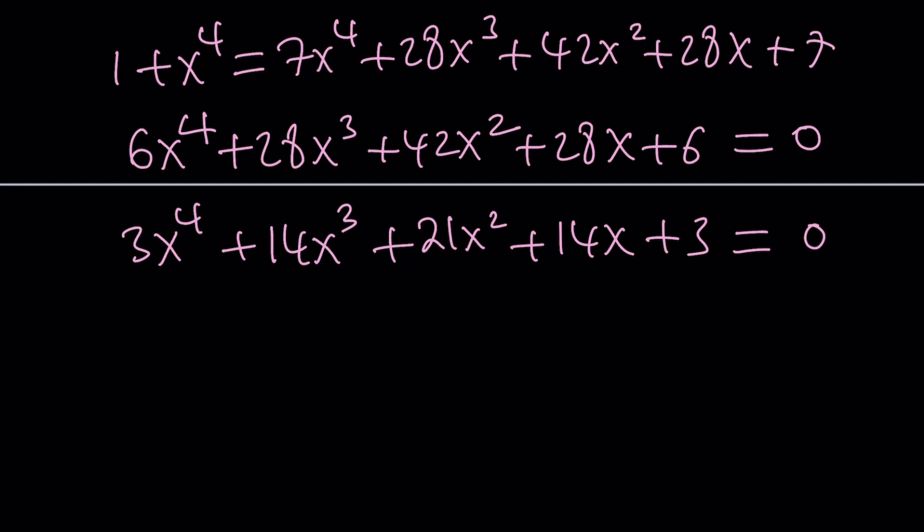So this becomes 3x to the 4th plus 14x cubed plus 21x squared plus 14x plus 3 equals 0. Awesome. Are we going to use the quartic formula? No. That's going to be complicated. Time-consuming. There's actually a better way.